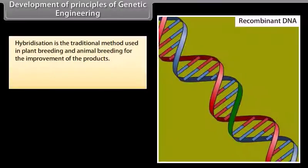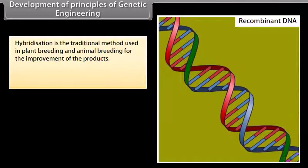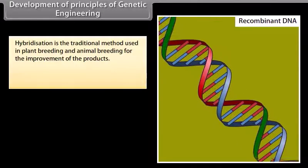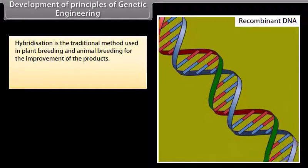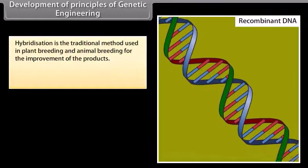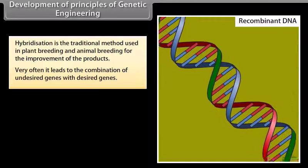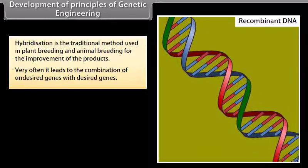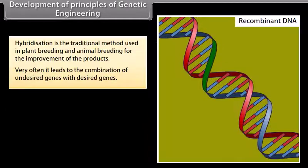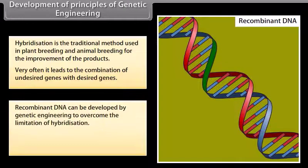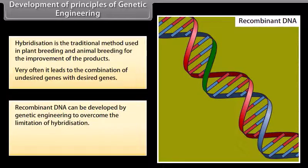Development of principles of genetic engineering. Hybridization is the traditional method used in plant breeding and animal breeding for the improvement of products. Very often it leads to the combination of undesired genes with desired genes. Recombinant DNA can be developed by genetic engineering to overcome the limitation of hybridization.